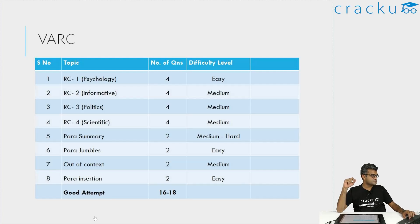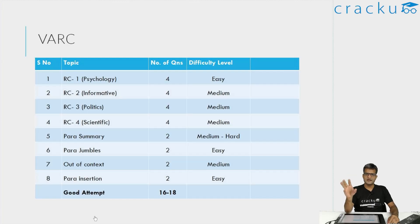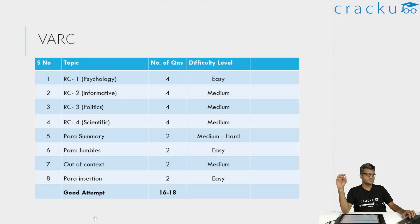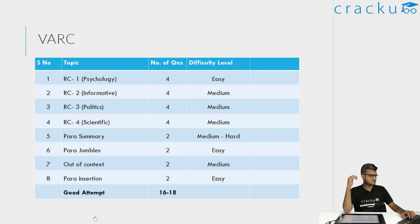The fourth RC was with respect to language and inference. Amongst the four RCs, this was the most difficult to read, but standalone it was not a difficult RC — philosophy RCs or some technology RCs will be much more difficult to read. It started off easy but towards the end became complicated. Even though I found it slightly difficult to read, the questions were fairly straightforward. I think there was only one inference-based question, which was also not very difficult. So overall, the questions were not very difficult.